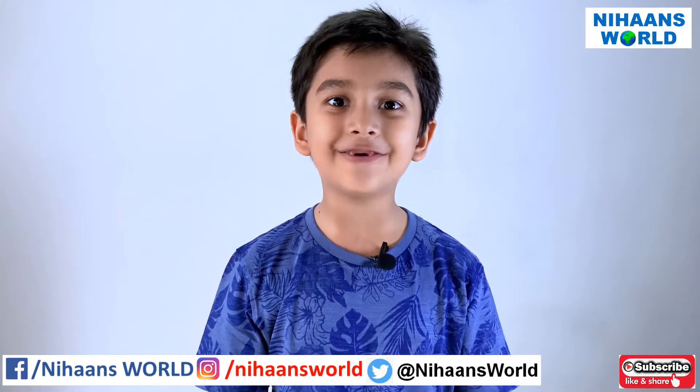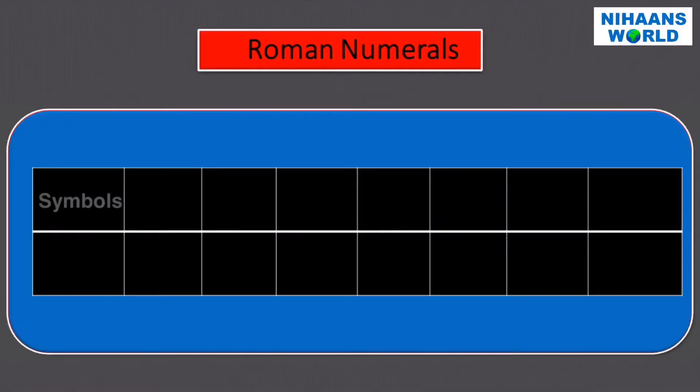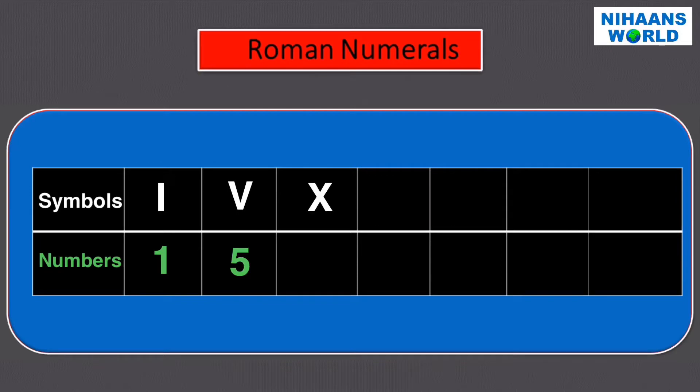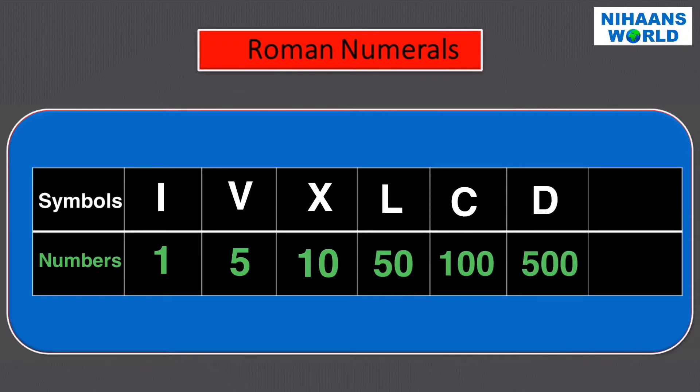Let's understand Roman numerals. Here are letters used to write the numbers. The symbol I is equal to one, V is equal to five, X is equal to ten, L is equal to fifty, C is equal to one hundred, D is equal to five hundred, M is equal to one thousand.